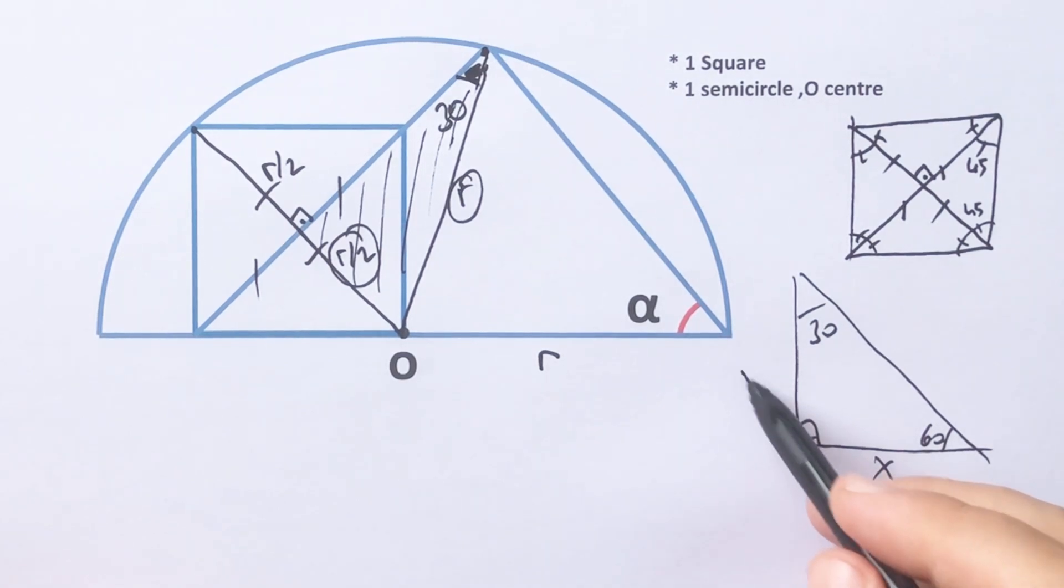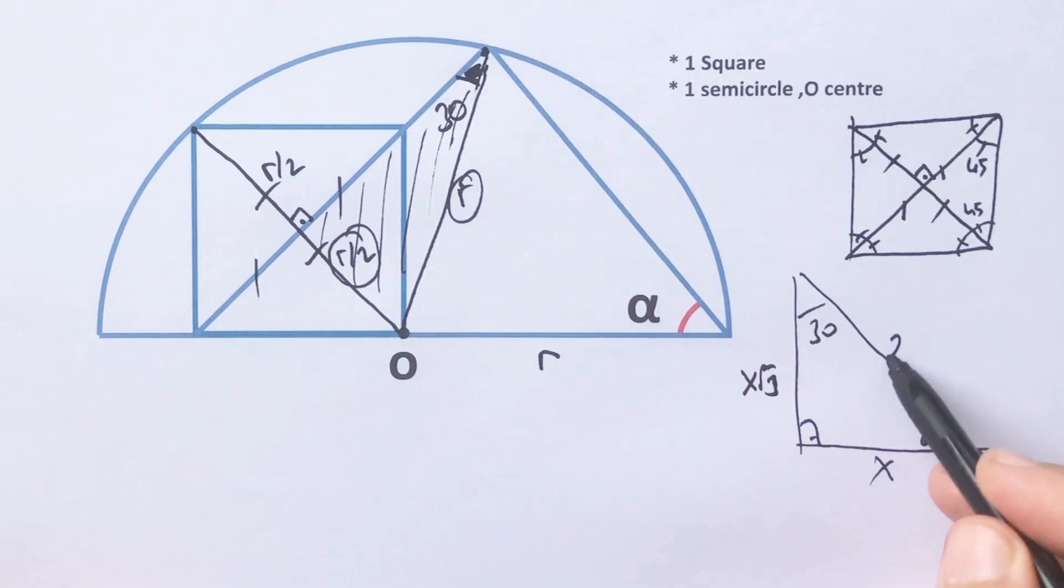if ratio of hypotenuse and side equal to 2, that means this angle must be 30 degrees.